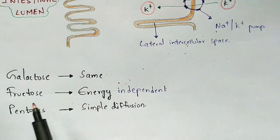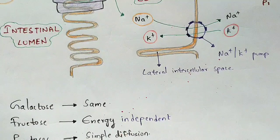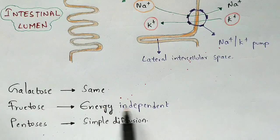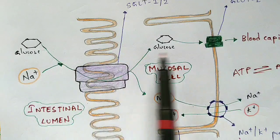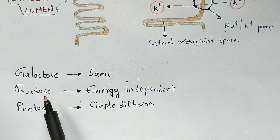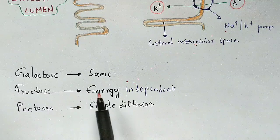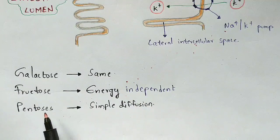Not only glucose but also galactose, fructose, and pentose are present as monosaccharides. Galactose is transported in the same way as glucose, utilizing Na+ ions as the source of energy to reach the blood capillaries. Fructose, however, is energy independent — it does not utilize Na+ ions or ATP. Fructose is first converted into glucose and then enters the blood capillaries by an energy independent process. Pentose enters the blood by simple diffusion.